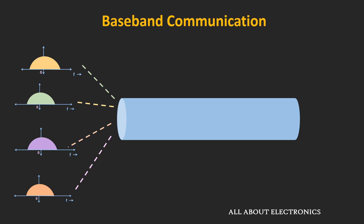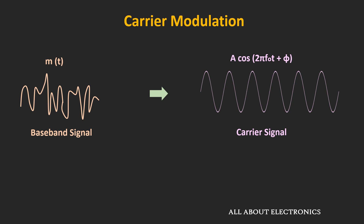Because of that, the frequency band of each user will overlap with each other. So using modulation, the frequency spectrum of the baseband signal can be shifted to a non-overlapping band at high frequencies. The communication which uses modulation to shift the frequency spectrum of the message signal is known as carrier communication.